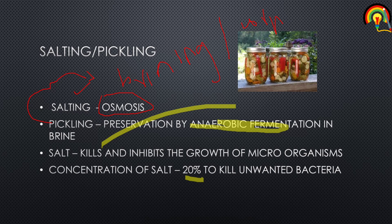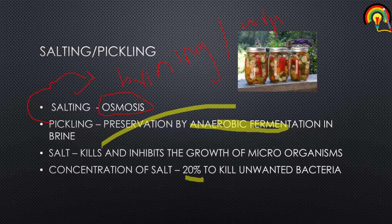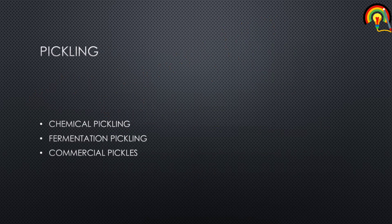Pickling is a method of preserving food in an edible antimicrobial liquid. To summarize: salting is the removal of water through osmosis; in pickling, anaerobic fermentation takes place in brine — a solution of salt and water. Salt kills and inhibits microorganism growth at around 20 percent concentration. Pickling preserves food in an edible antimicrobial liquid. There are three types of pickling.